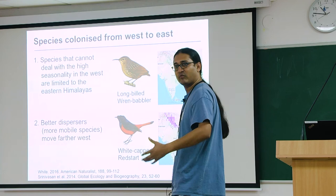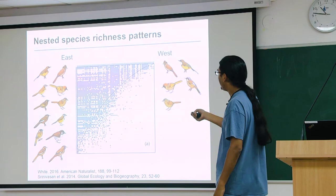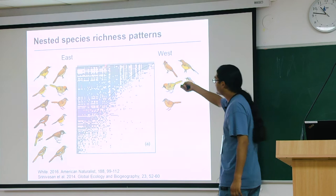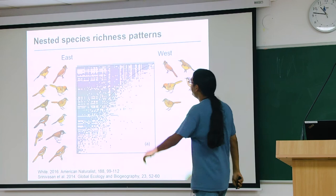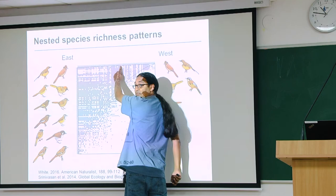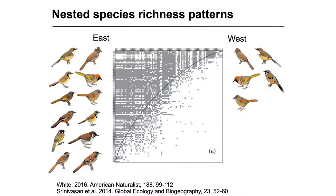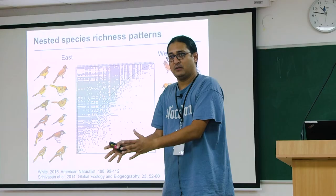If you look at this pattern — East Himalayas to West Himalayas — with each tick representing a species, you see that as you go towards the West, species start dropping out. The East has a large number of species, and as you go further West, the number of species declines. In general, the Western community of birds is a subset of what's found in the East, because species have been dropping out as you go West — either they're not good dispersers or they can't deal with the seasonality.